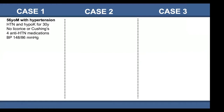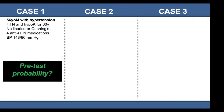The first patient is a 56-year-old man with a history of hypertension and hypokalemia for 30 years. He does not eat licorice and has no signs or symptoms of Cushing syndrome. He's currently on four antihypertensive medications, yet his blood pressure is still high at 148 over 86. What is your pre-test probability? I would hope you all think it's very high — he has high blood pressure, hypokalemia for more than 30 years, and is on more than three blood pressure medications with low potassium.